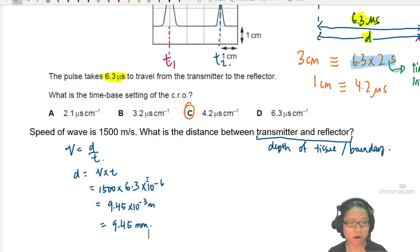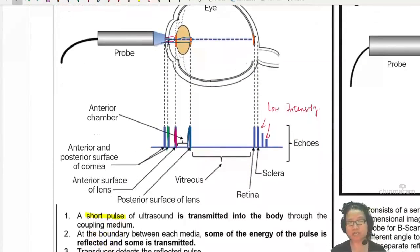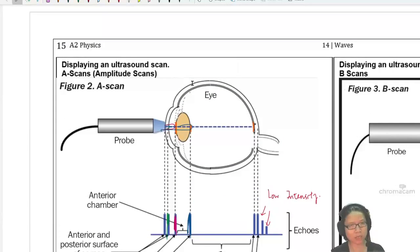To recap for an A scan, the ultrasound will be reflected at different boundaries of the eye. The reflected boundary time interval will tell us the width and the thickness. This is A scan, amplitude scan or 1D scan.